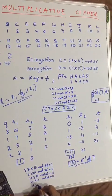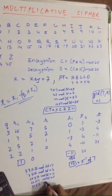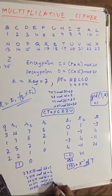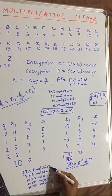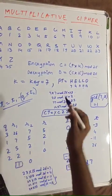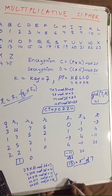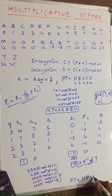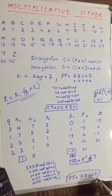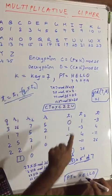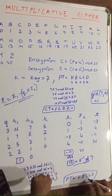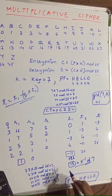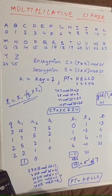For U (=20): 20 × 15 mod 26 = 14. Checking these values against the alphabet: 7=H, 4=E, 11=L, 11=L, 14=O — we get back our original plaintext 'H E L L O'. This was all about multiplicative cipher. Thank you.